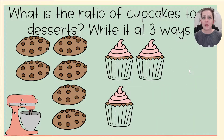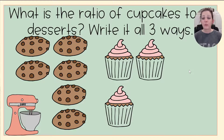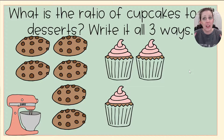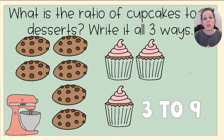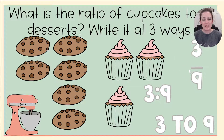Let's look at another example: what is the ratio of cupcakes to all desserts? Write it in three different ways. How many cupcakes do we have? Three. How many desserts are there total? There are nine desserts, because we have six cookies and three cupcakes, and six plus three makes nine. So this time my ratio is three to nine — three cupcakes to nine total desserts — written in all three ways.